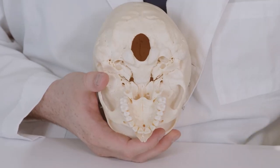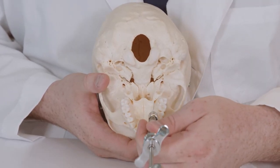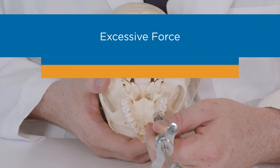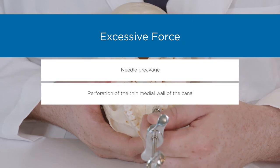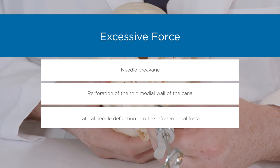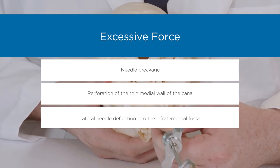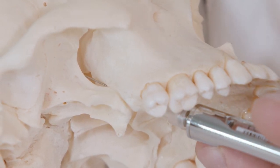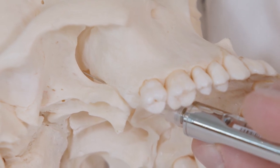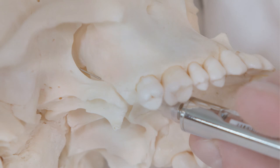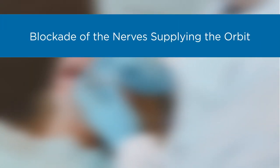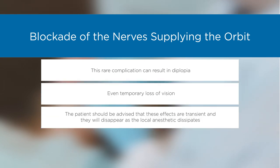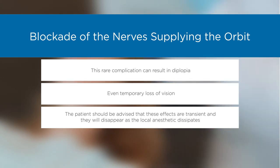Perhaps one-tenth of the canals have bony obstructions that may prevent passage of the needle. If the canal cannot be negotiated, the injection should be aborted — excessive force can lead to needle breakage, perforation of the thin medial wall of the canal, or deflection of the needle laterally into the infratemporal fossa. If the needle pierces the medial wall of the pterygopalatine canal and enters the nasal cavity, air will be drawn back into the syringe during aspiration. If the needle is advanced too high in the pterygopalatine fossa, blockade of the nerve supplying the orbit can occur, resulting in diplopia or even temporary loss of vision. The patient should be advised that these effects are transient and will disappear as the local anesthetic dissipates.